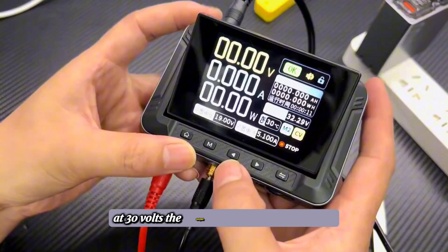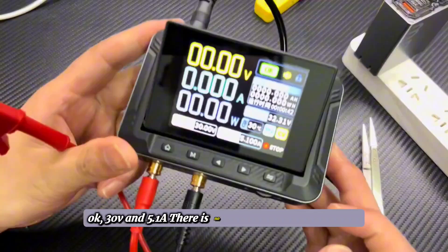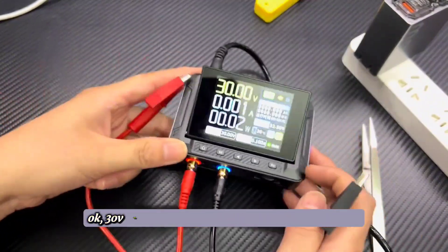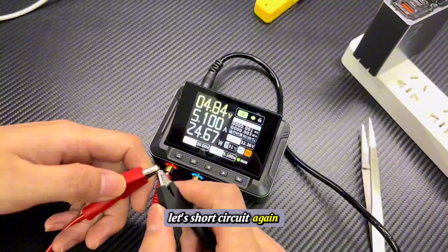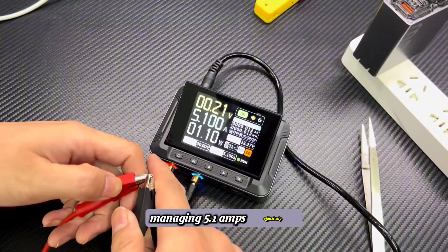The full power output is 150 watts. At 30 volts, the output runs smoothly. No issues. Let's short circuit again. Still no problem. It's quite a reliable unit, managing 5.1 amps effectively.